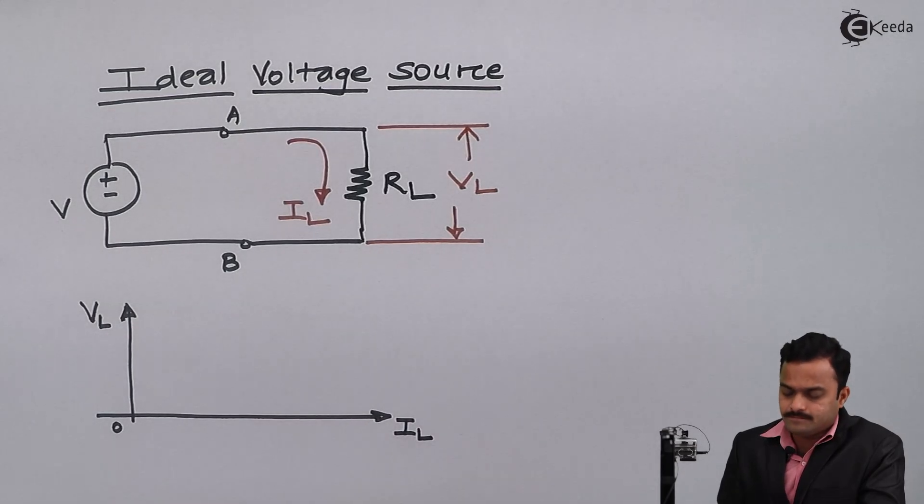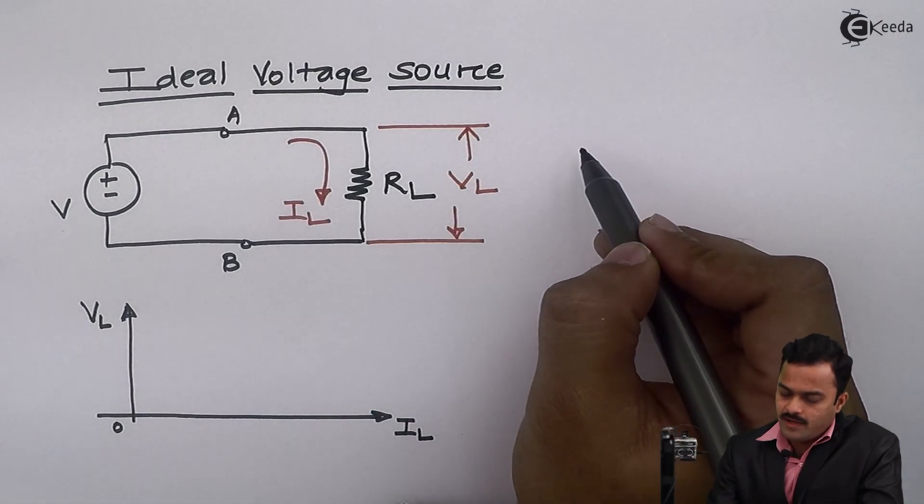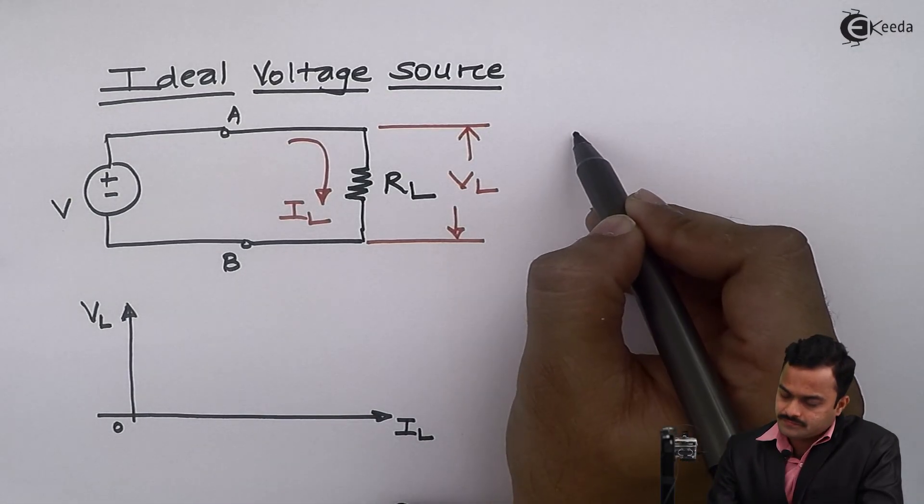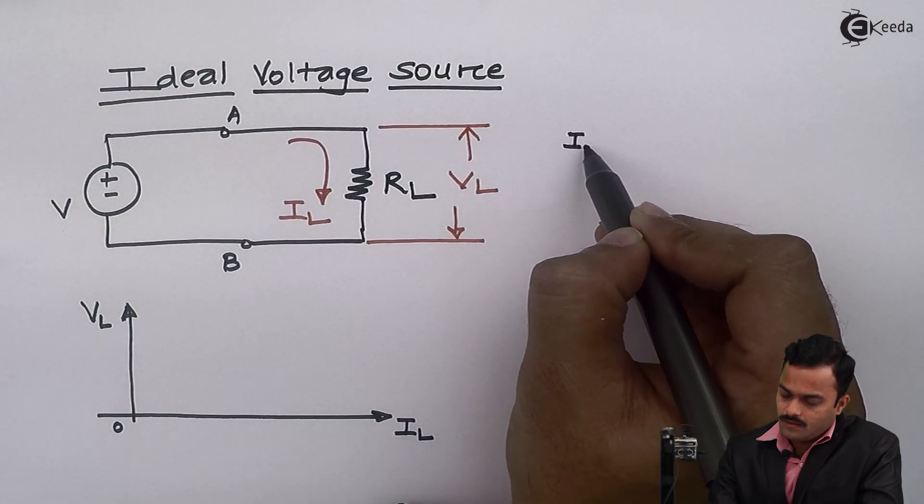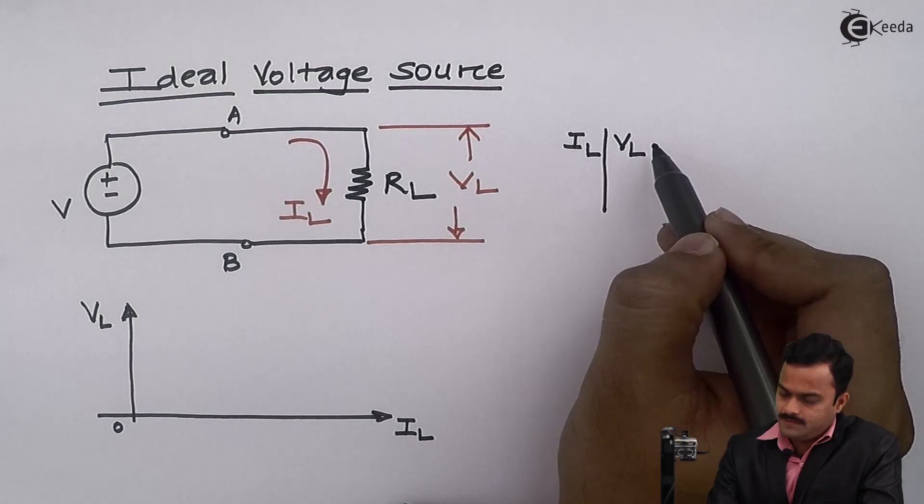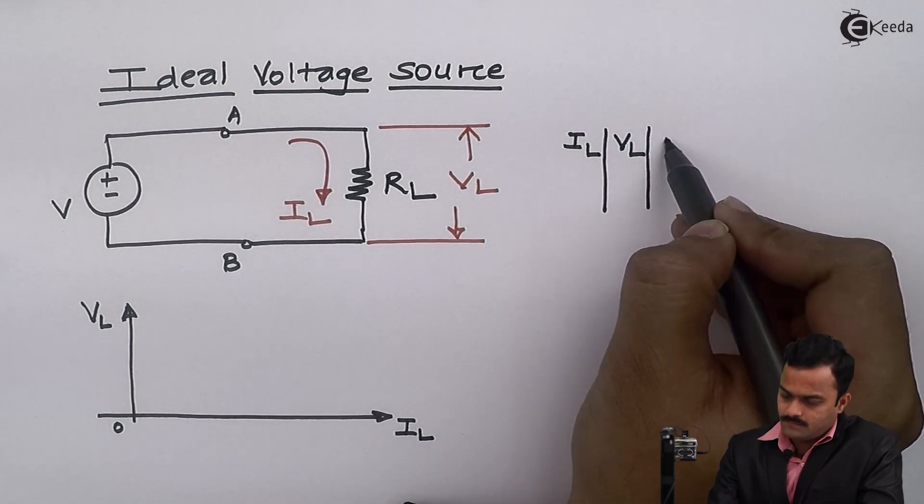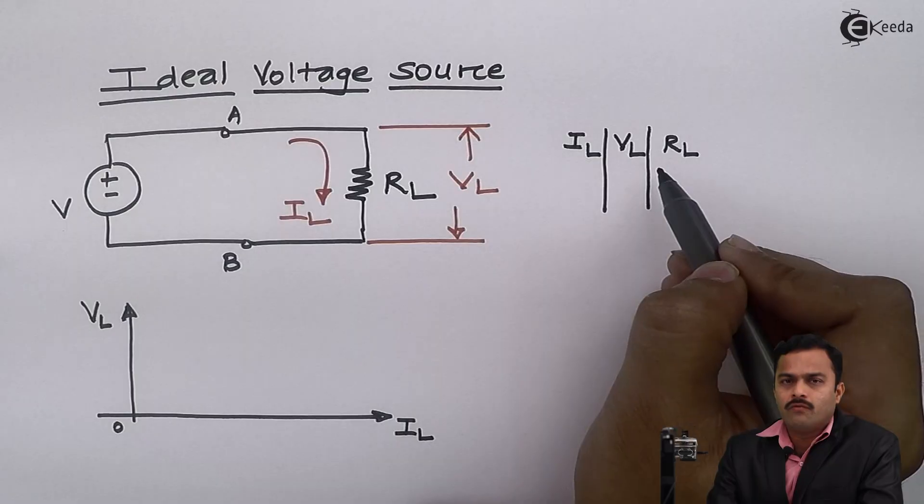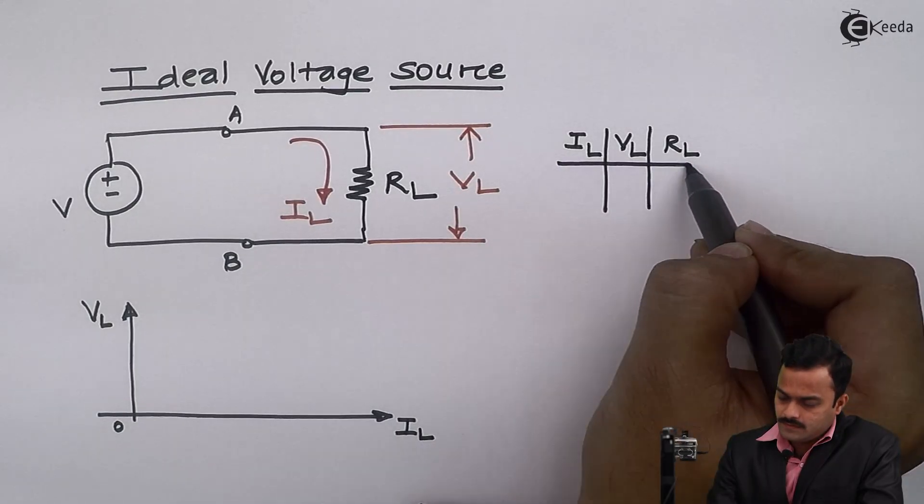Now let's make a simple table where I can have IL, VL, and value of RL.